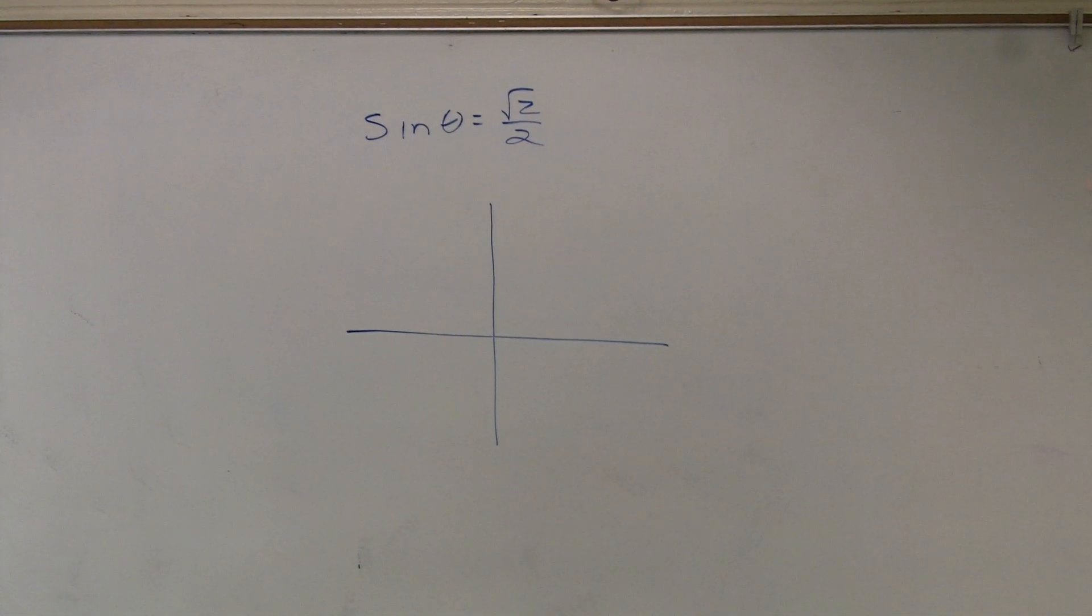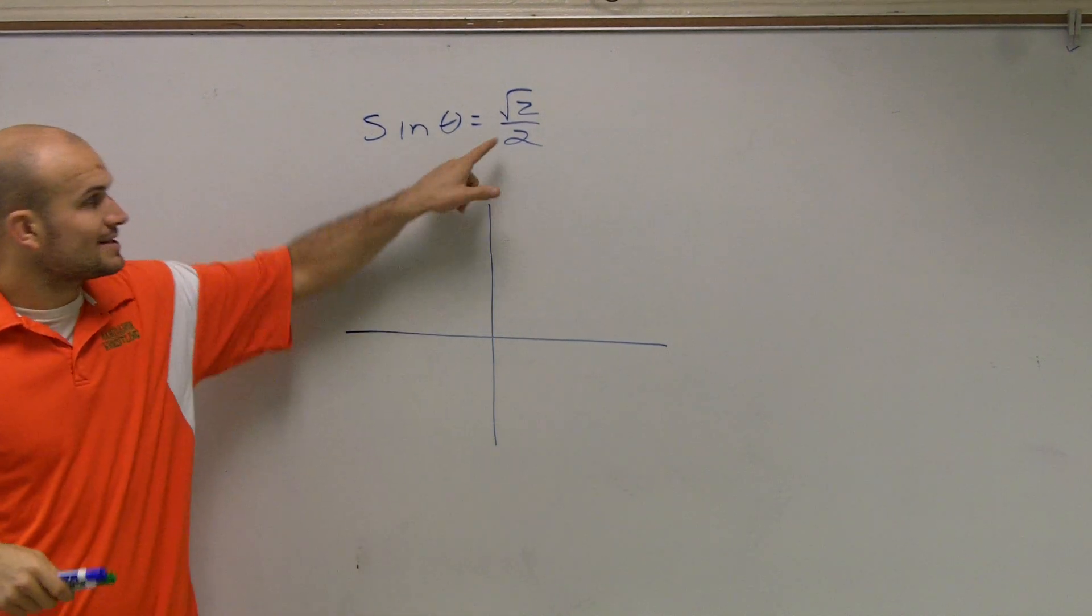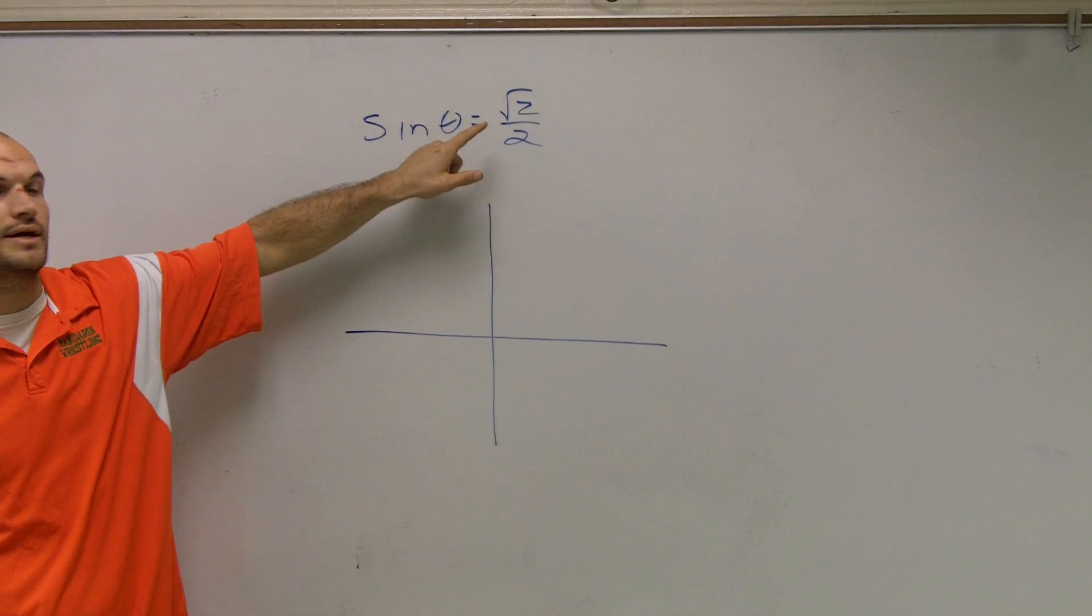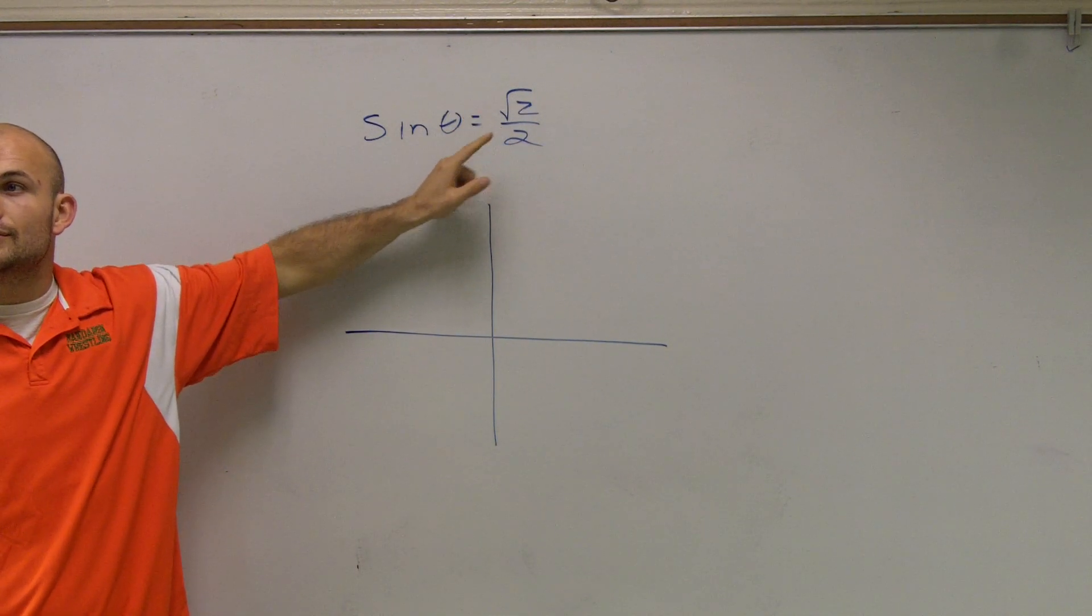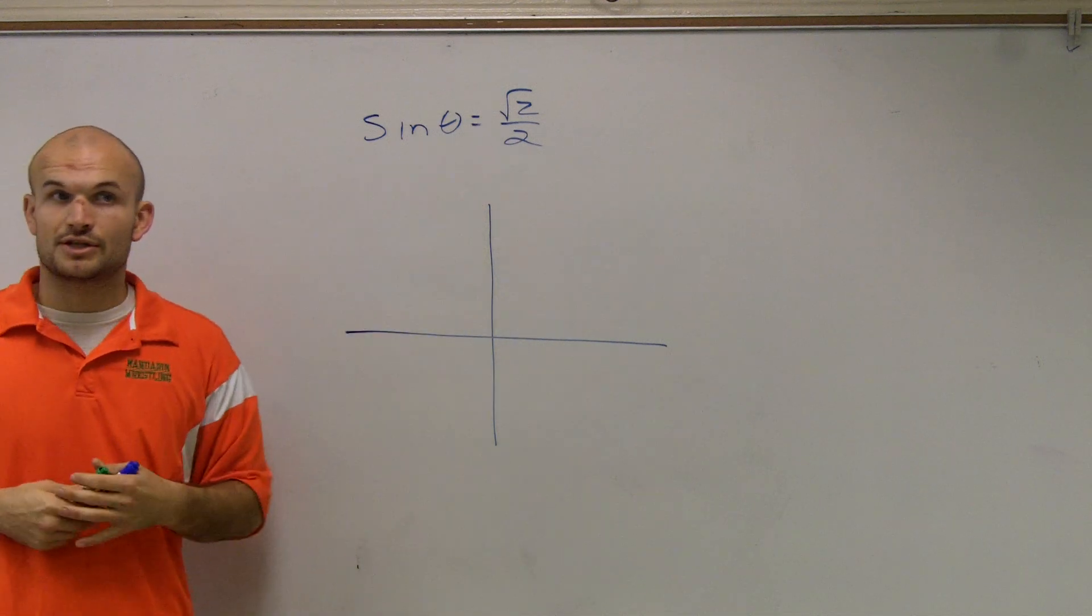On this one, for sine of theta equals square root of 2 over 2, if you guys remember, this is a point on the unit circle. So what they're asking us to do is find theta that corresponds to that point on the unit circle.